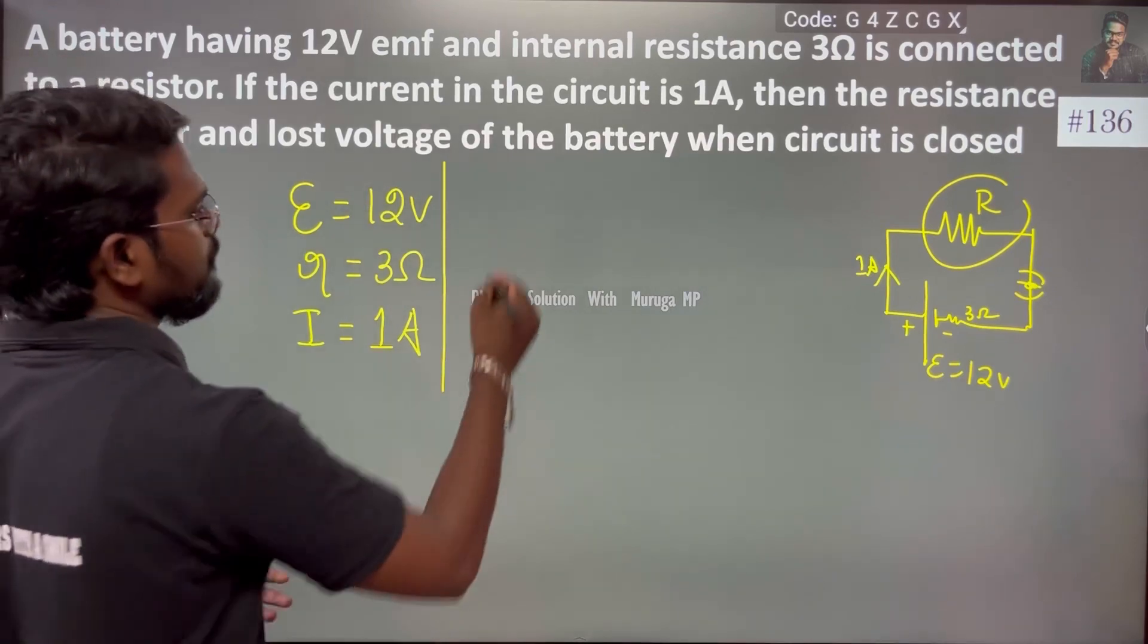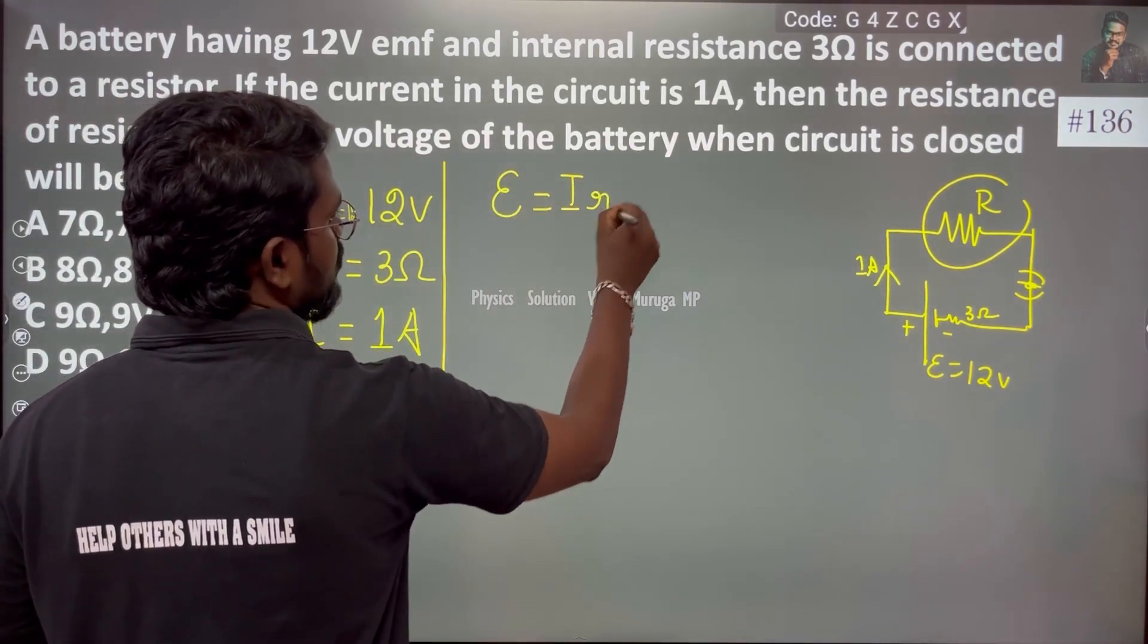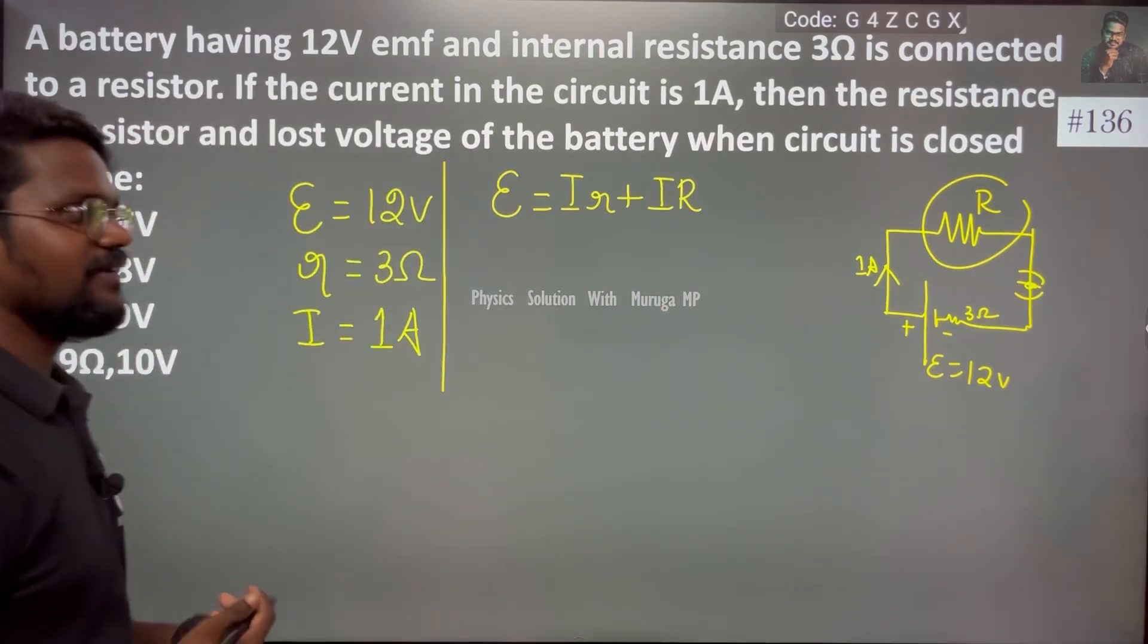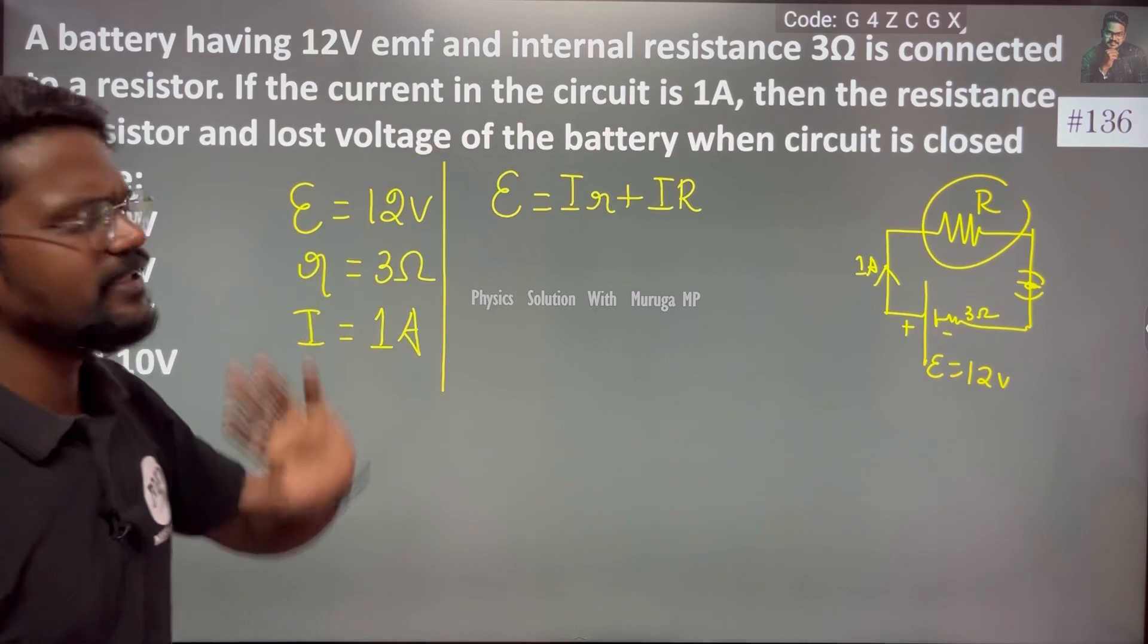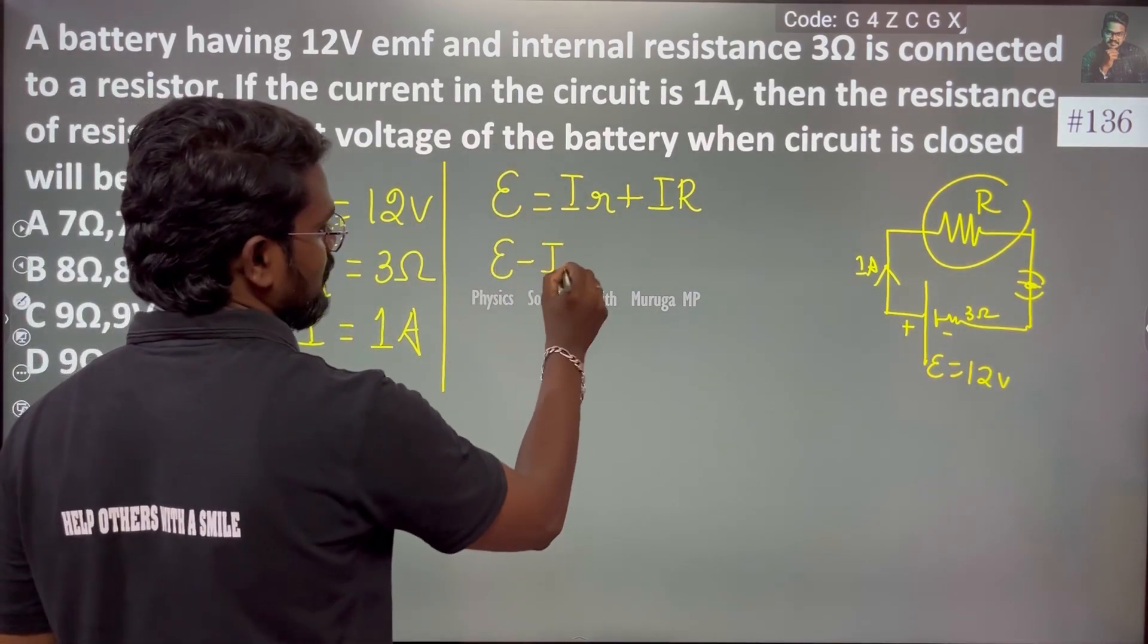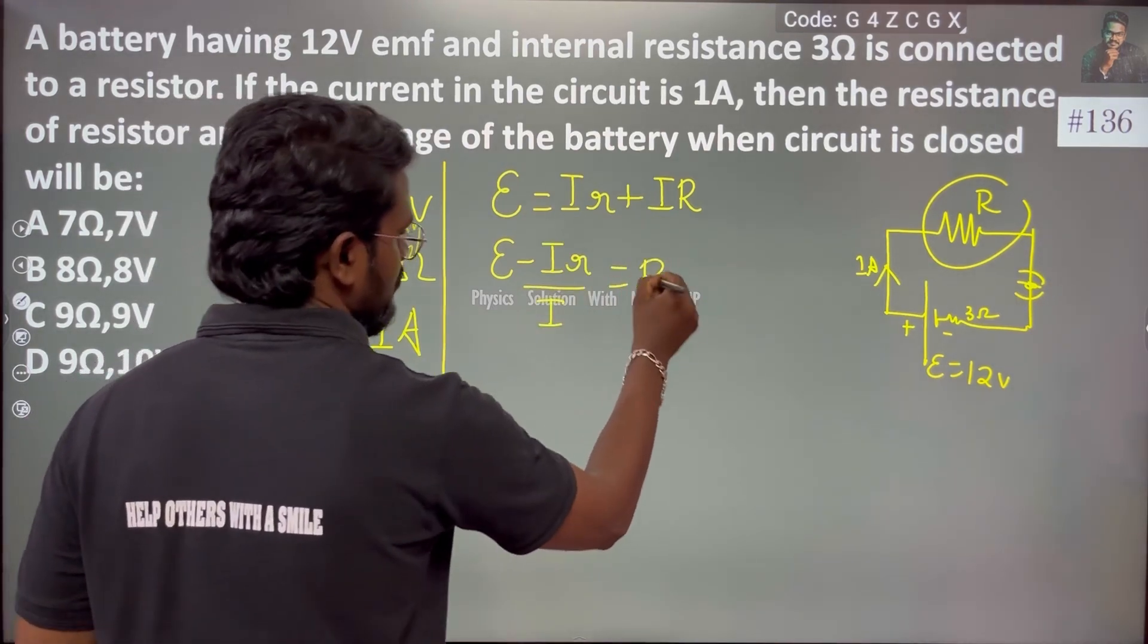We apply the formula: EMF is equal to IR plus Ir, where r is internal resistance. This means EMF is equal to I(R + r).